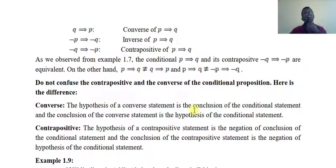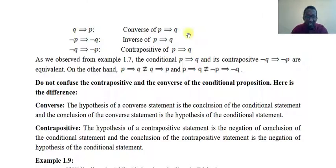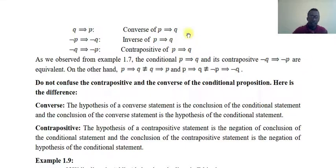The contrapositive — if you want to see what happens, here is P implies Q. The converse of P implies Q: this is the implication, and this is the conversion. Now in terms of the contrapositive — this is kind of a contrapositive. This is the end contrast of the conclusion.